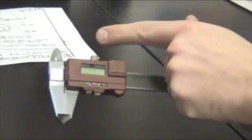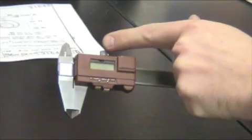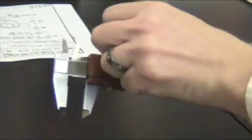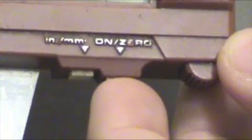It has a lock that locks it into place. Turn it, locks. Turn it again to unlock it. Underneath, switch it from inches to millimeters. And in this particular gauge, there is a button to turn it on and to zero it out.